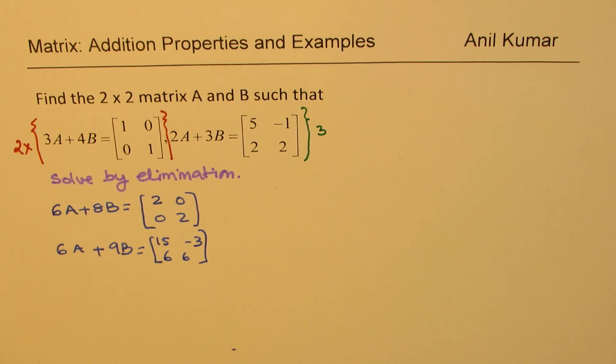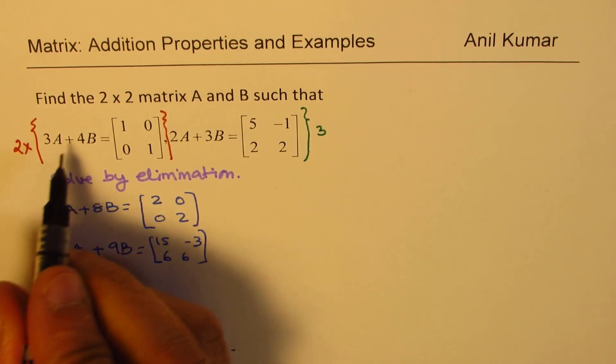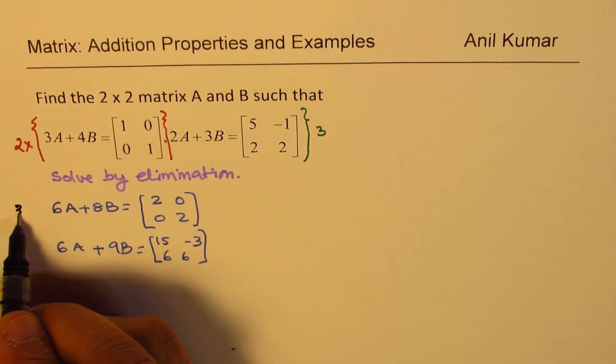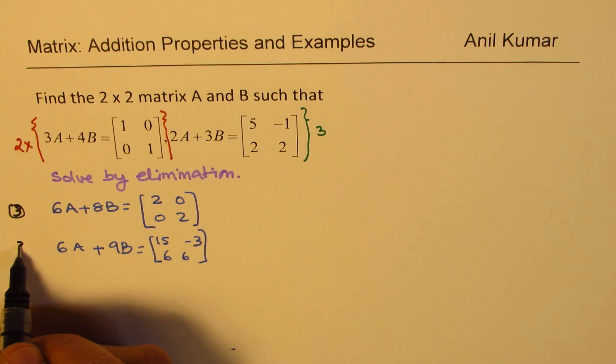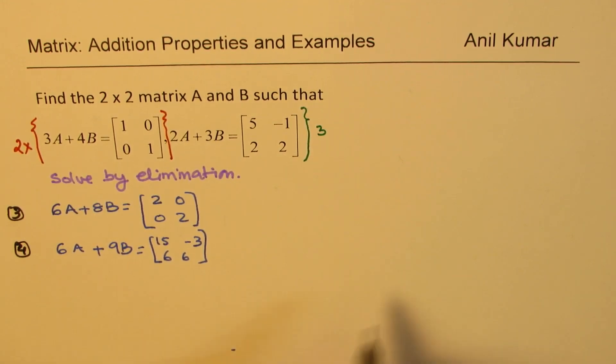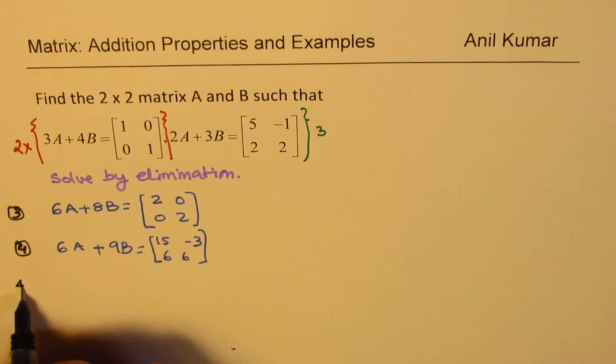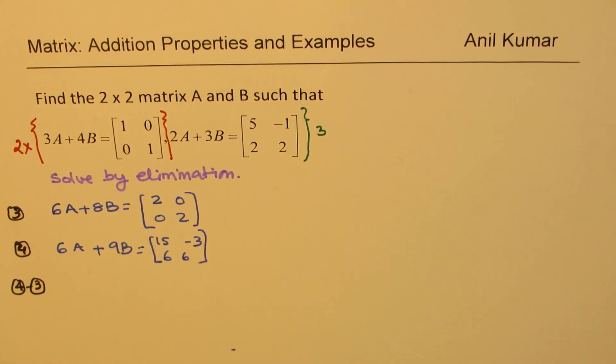So we get our other two equations. Let's call these as equations 3 and 4. Now what we can do here is we'll do equation 4 minus equation 3.